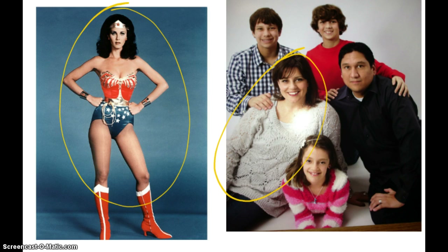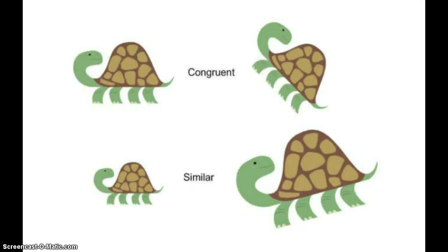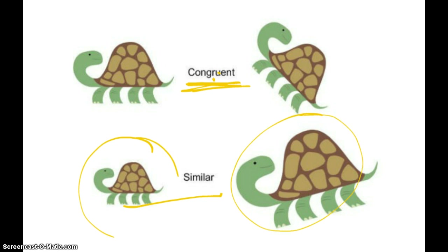What does it mean for objects or shapes to be similar? In math we have two very specific vocabulary words we use when describing two shapes or objects. These two turtles we would say are congruent — they are exactly the same. But these two turtles are not congruent; they're not exactly the same. This one's small and this one's large — we call these similar. Same is congruent; close to being the same is similar.